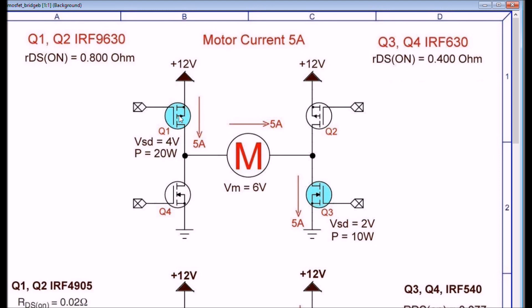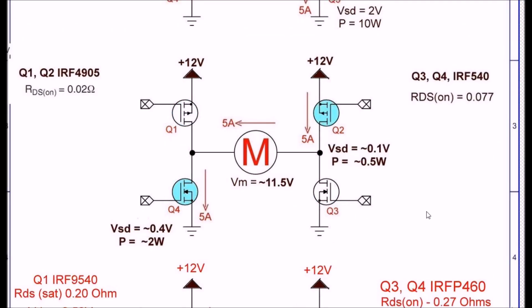But all is not lost and here is the solution. When you choose components I'm going ahead and replace the p-channel MOSFETs with an IRF4905. This has an RDS on of 0.02 ohms, that's a fraction of 0.8. And I've also replaced Q3 and Q4 with an IRF540 which has an RDS of 0.077, so that's less than a fourth of the resistance of the IRF630.